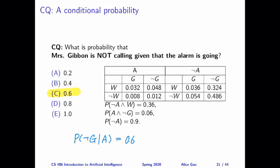The second question on slide 21 is very similar. We want to calculate the probability that Mrs. Gibbons is not calling given that the alarm is going. So the probability of not G given A. This is equal to the probability of not G and A divided by the probability of A.